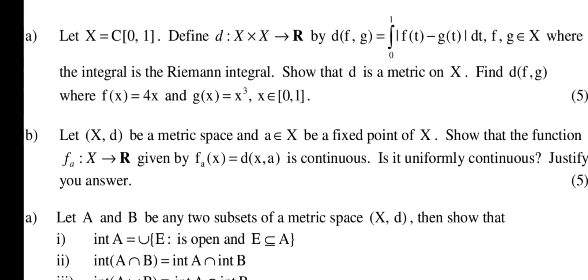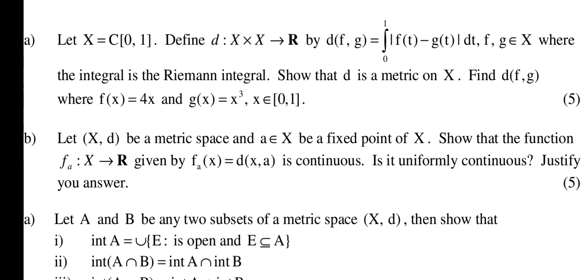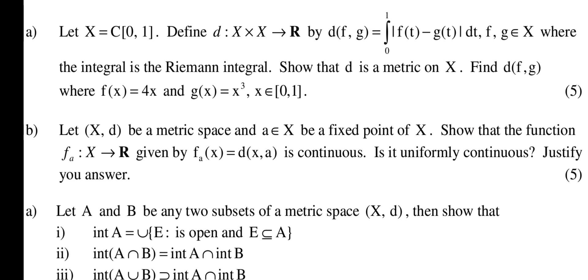The second question says: Let (X,d) be a metric space and a ∈ X be a fixed point of X. Show that the function f_a: X → R given by f_a(x) = d(x,a) is continuous. Is it uniformly continuous? Justify your answer.